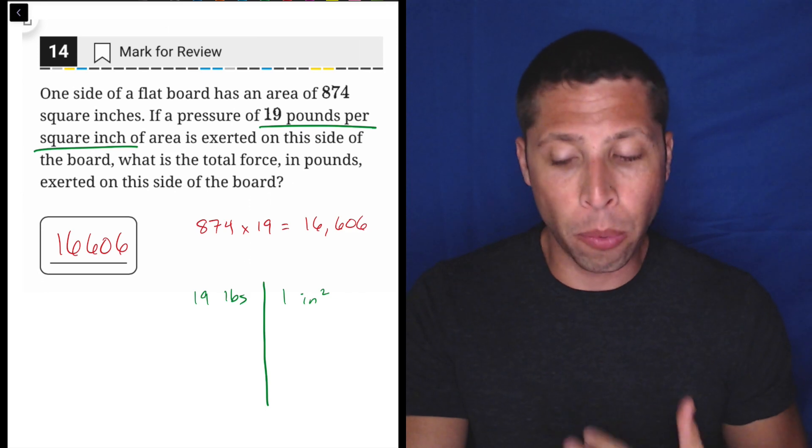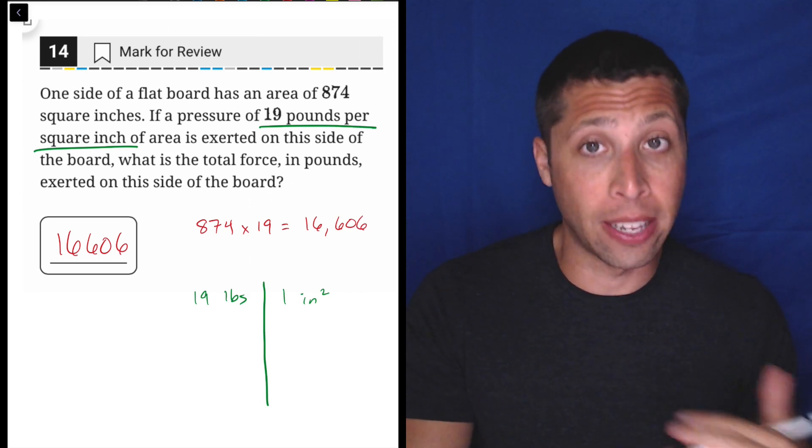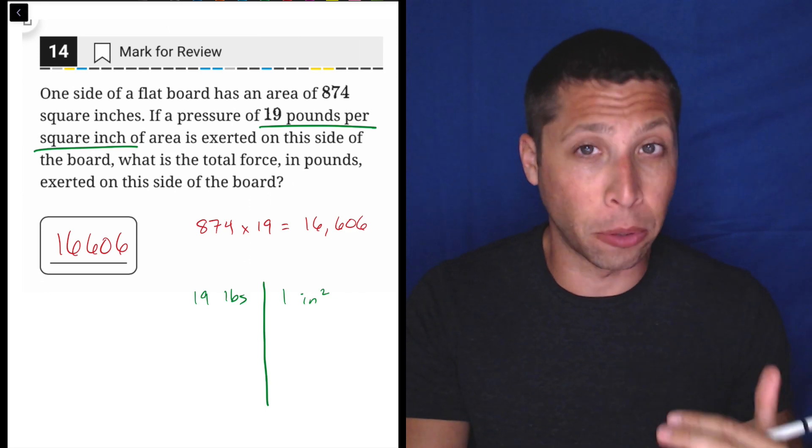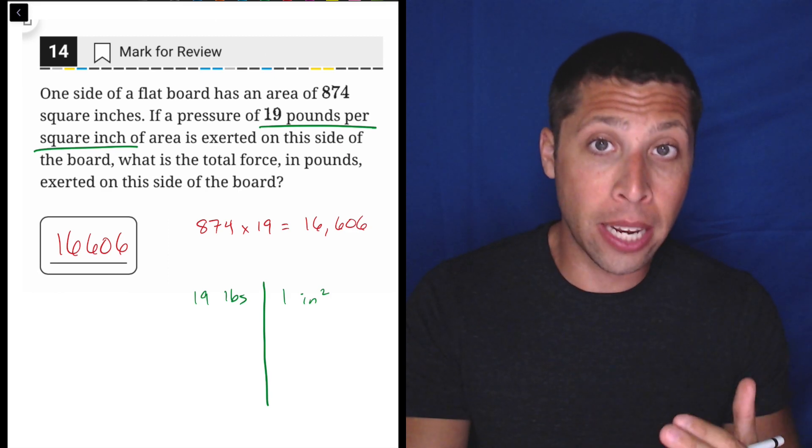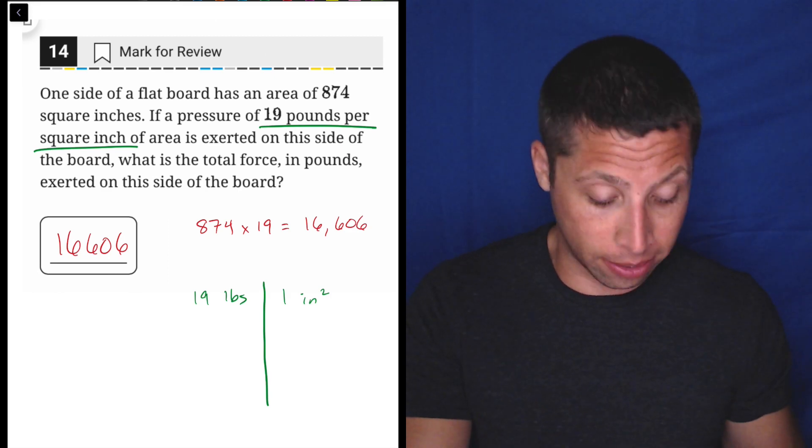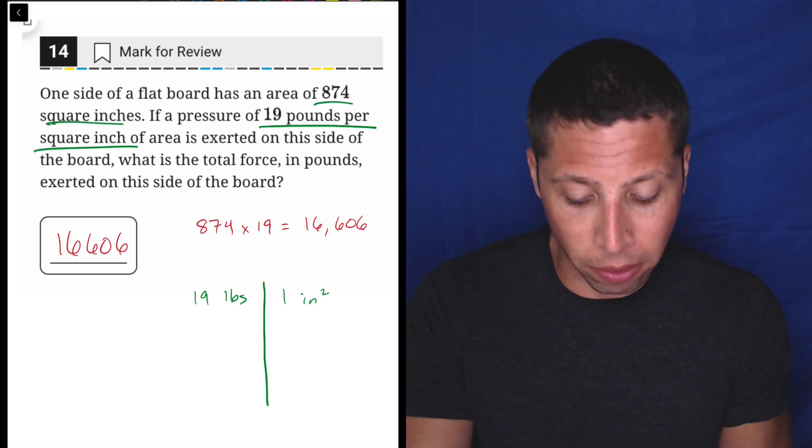And we use this method. What we're trying to do is eliminate all of the units. That's how we'll know we're probably done with the question. And in order to eliminate a unit, we need the same unit on the left side and the right side.